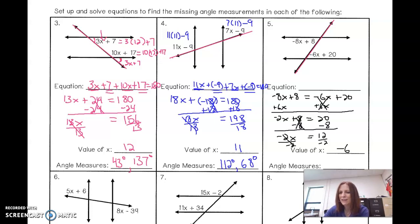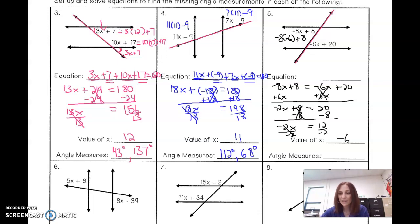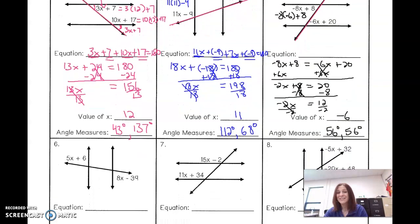Do not panic when you see a negative sign — this is the value of x, not the angle measure. Plugging in: negative 8 times negative 6 plus 8 is 56. As a hint, you can also plug into the other expression: negative 6 times negative 6 is 36, plus 20 is 56. Since they're congruent, both angles equal 56°. I usually check both to make sure I didn't make a mistake.